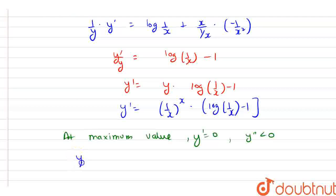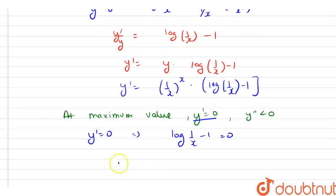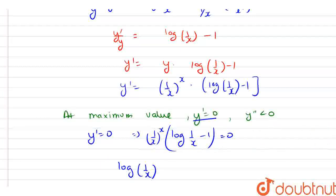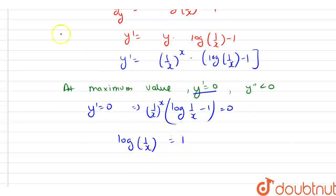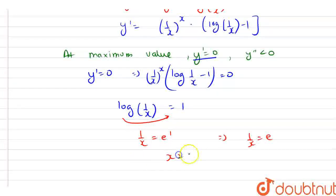From here, let's find the value where y' = 0. Since (1/x)^x is nonzero, we can write log(1/x) − 1 = 0. So, log(1/x) = 1. If the log comes to the other side, we have 1/x = e^1, or 1/x = e. So, from here we have x = 1/e. This is the value of x.